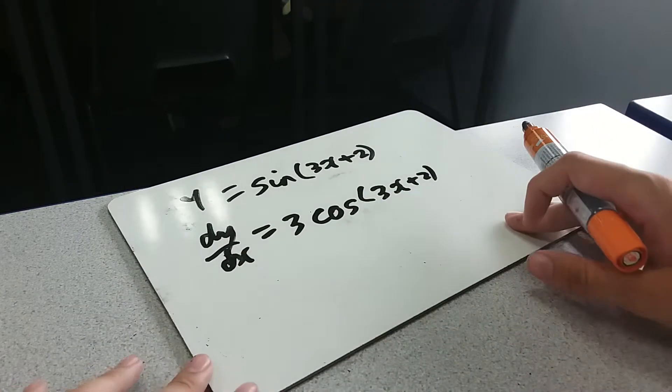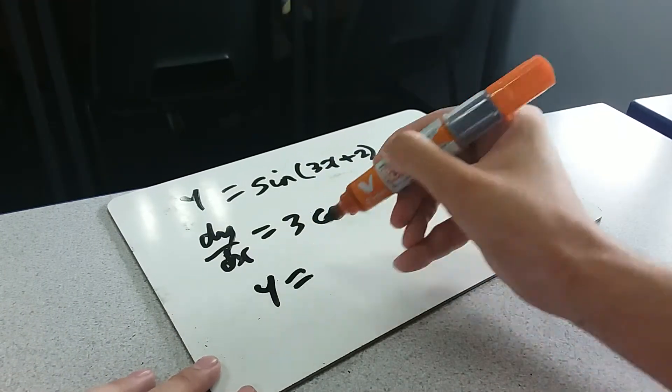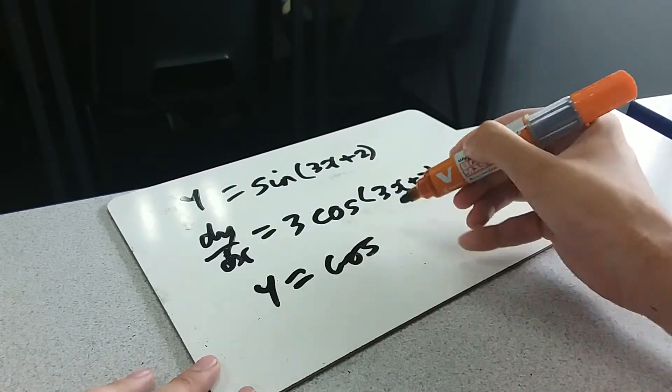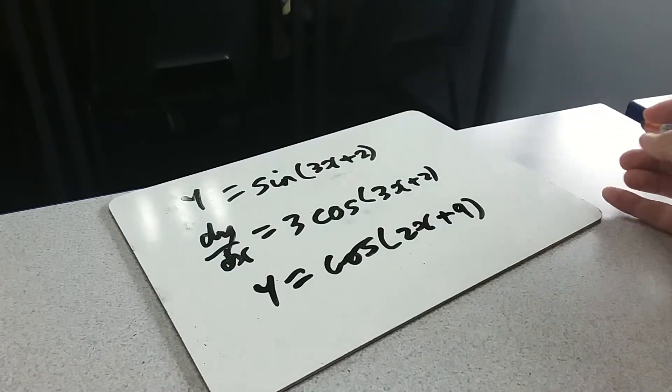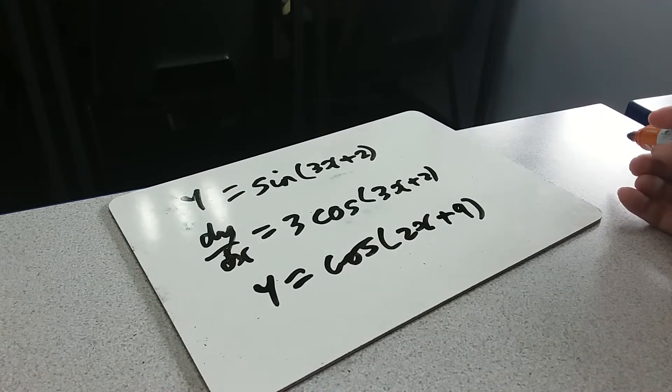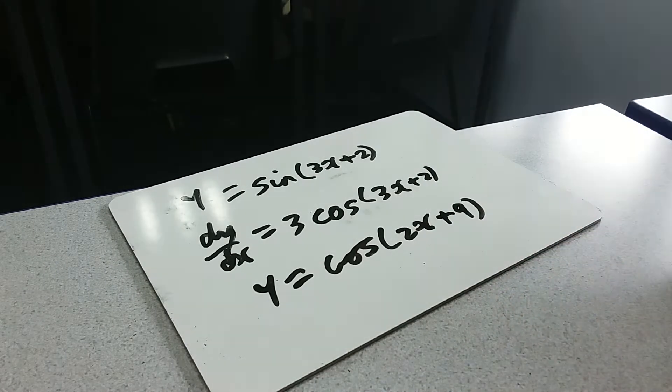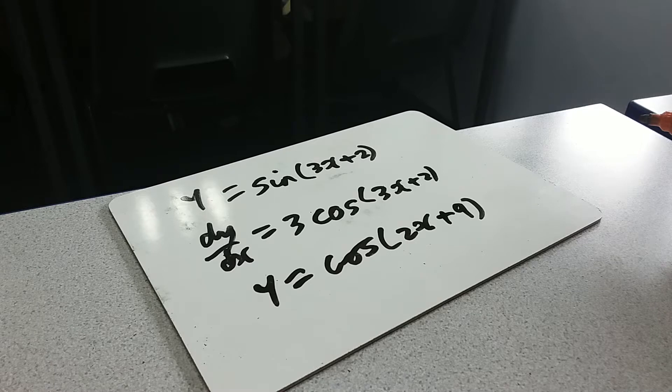Here's one for you to have a go at. y equals cos of 2x plus 9. You might want to pause the video, but see if you can do it by observation. If you can't, pick u equals the bit inside and go through. Right, over to you.